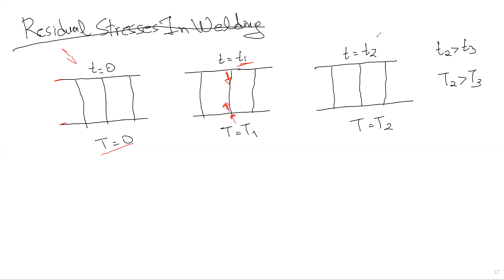After some time at T2, which is greater than T1, we allow the column in the middle to cool down. During cooling, the middle column wants to contract — it wants to shrink. But again, because of equilibrium reasons, a tensile stress is developed in the middle column.